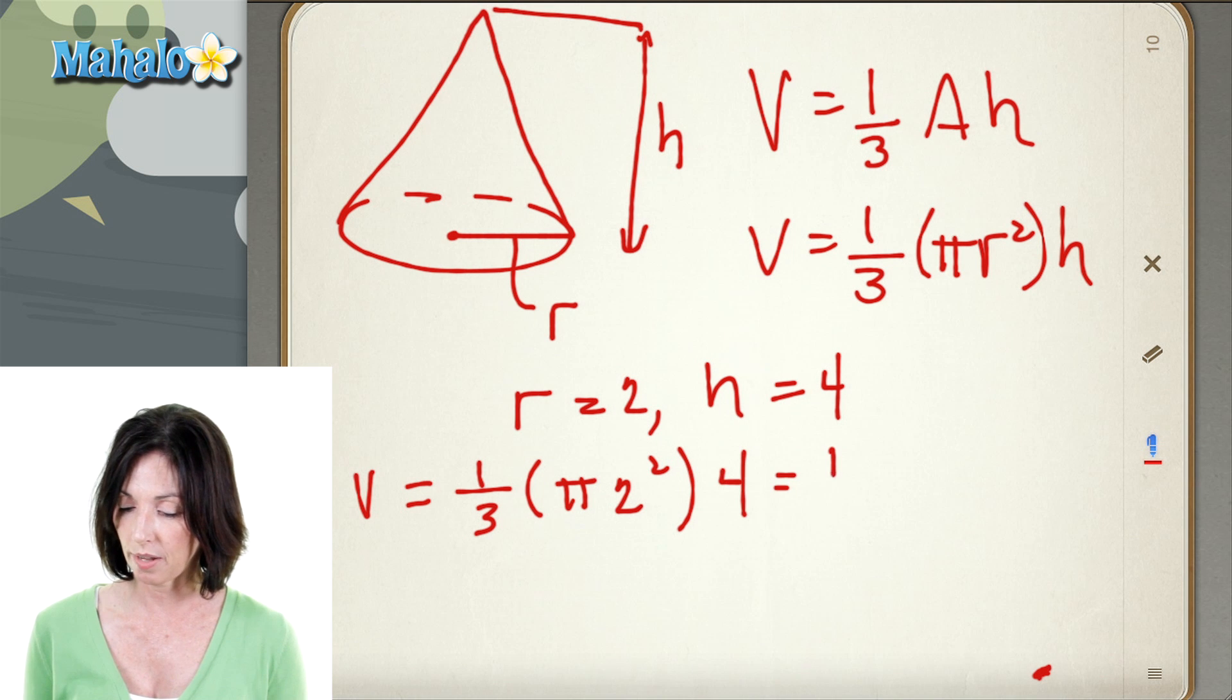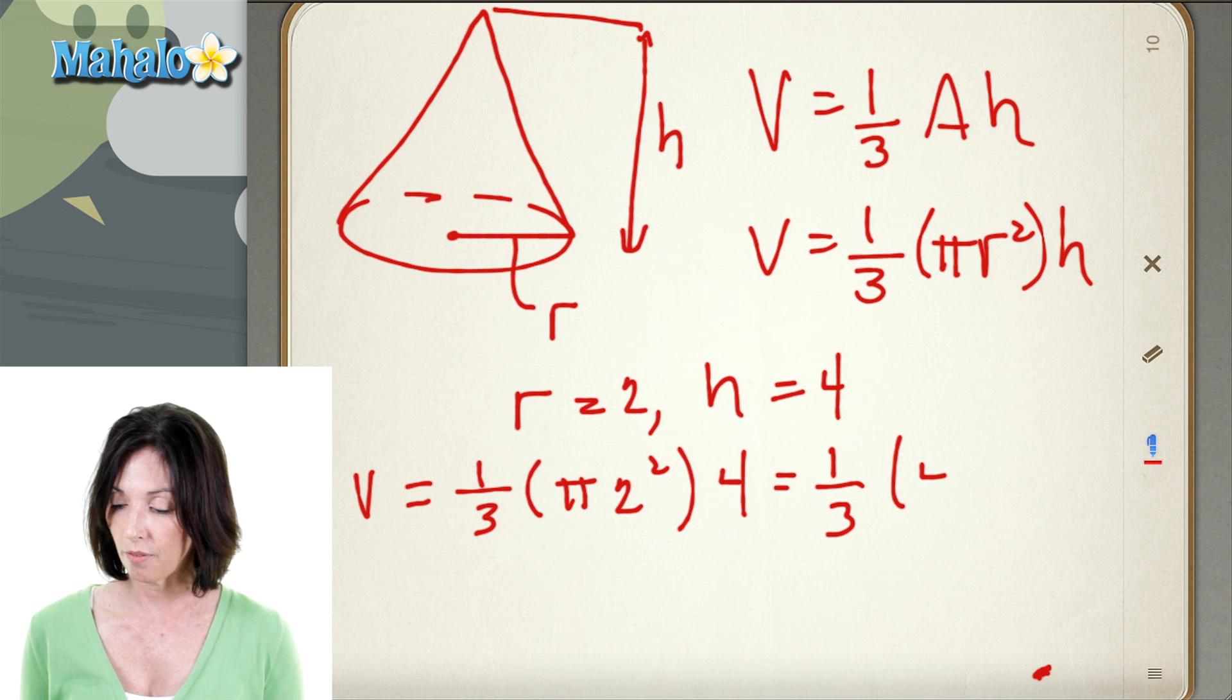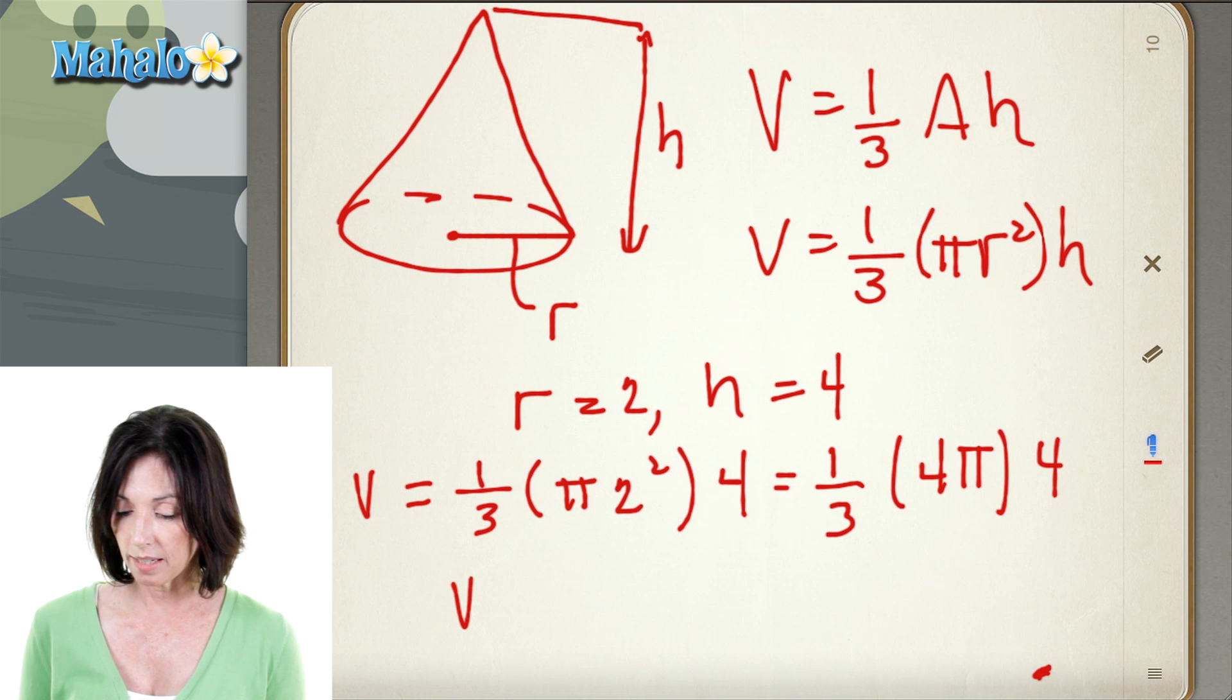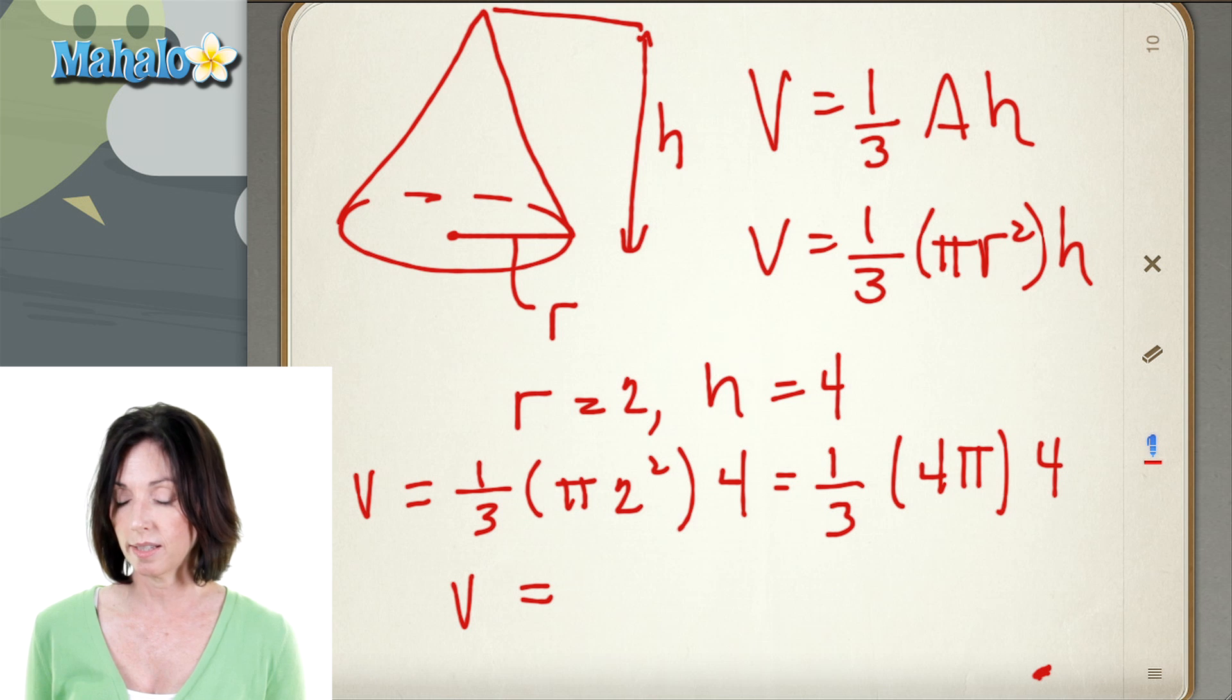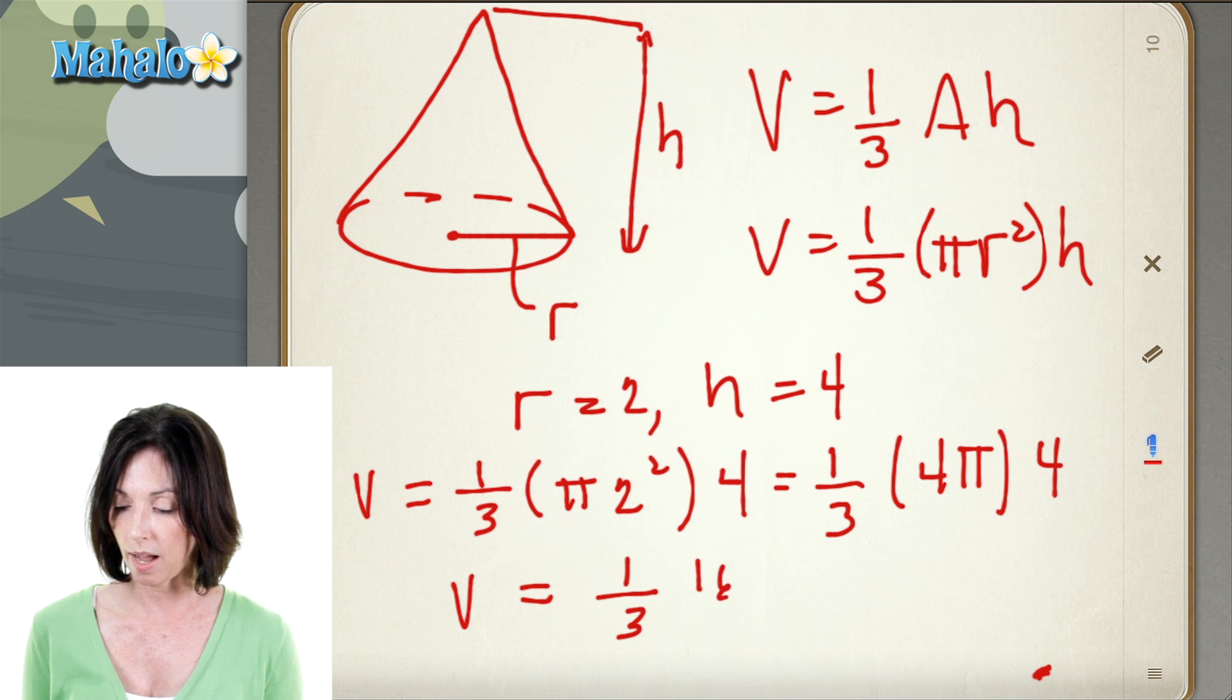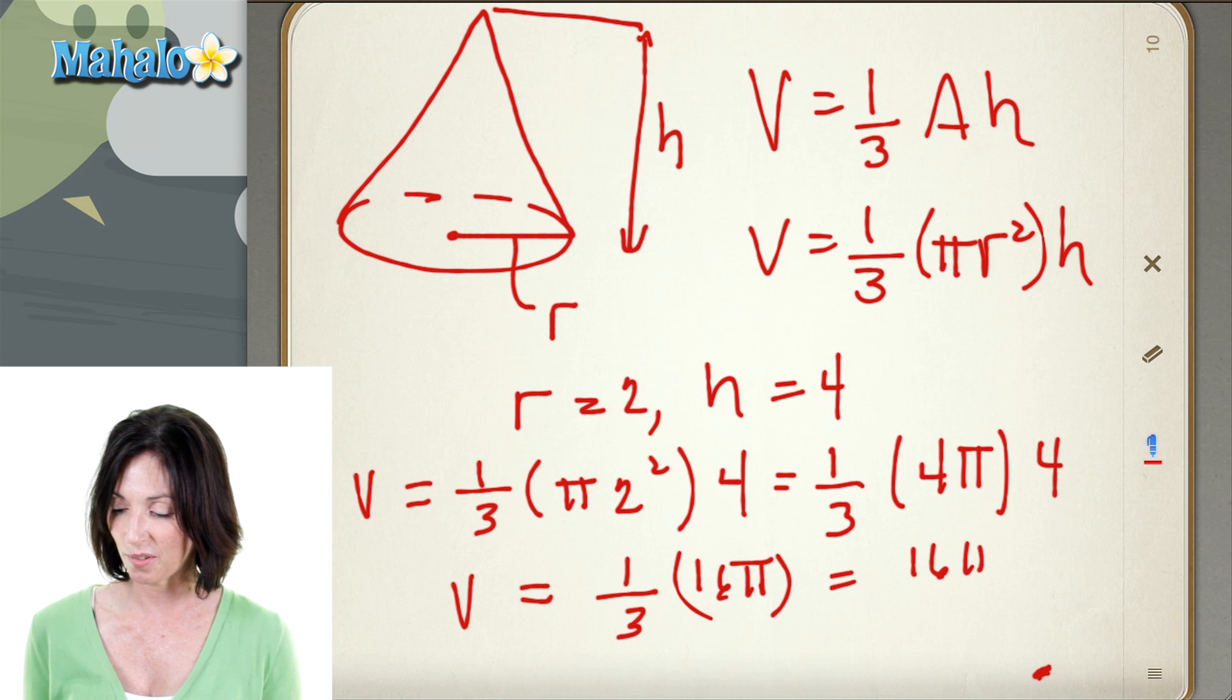Okay, so I'm going to leave that one-third out there for now. Now 2 squared is 4, so that means I have 4 pi times 4, my height. So then I have my volume equal to, now 4 pi times 4 is 16 pi. So I have one-third times 16 pi, which I can just rewrite as 16 pi over 3.